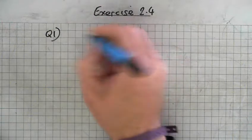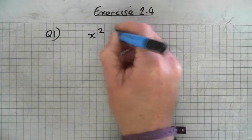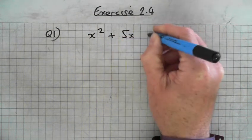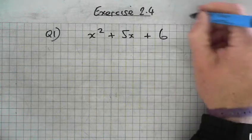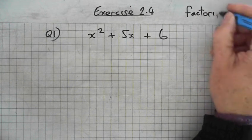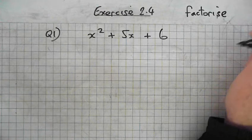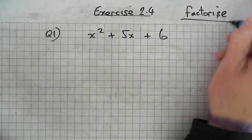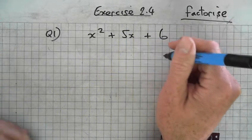Question 1. So x squared plus 5x plus 6. So we have to factorise. Factorise each of the following. Alright, so this is how we do it.